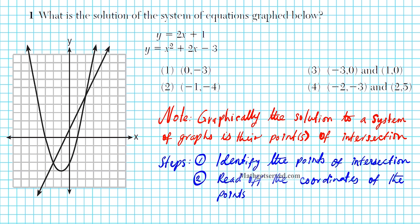It says: what is the solution of the system of equations graphed below? So we have a system of equations: y equals 2x plus 1, which is a line, and we have a parabola or quadratic, y equals x squared plus 2x minus 3. One thing you want to note is that when you're given a graph and you ask for the solution, the solution is represented by the points of intersection of the two graphs. So what are the coordinates of the points of intersection?